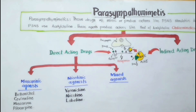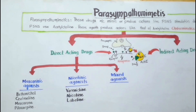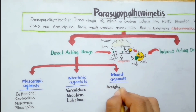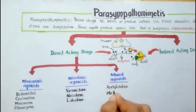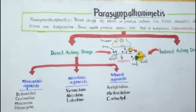Then we have the mixed agonists, meaning these drugs have agonistic activity on both types of cholinergic receptors — that is muscarinic receptors as well as nicotinic receptors. These agents include acetylcholine itself, methacholine, and carbachol.